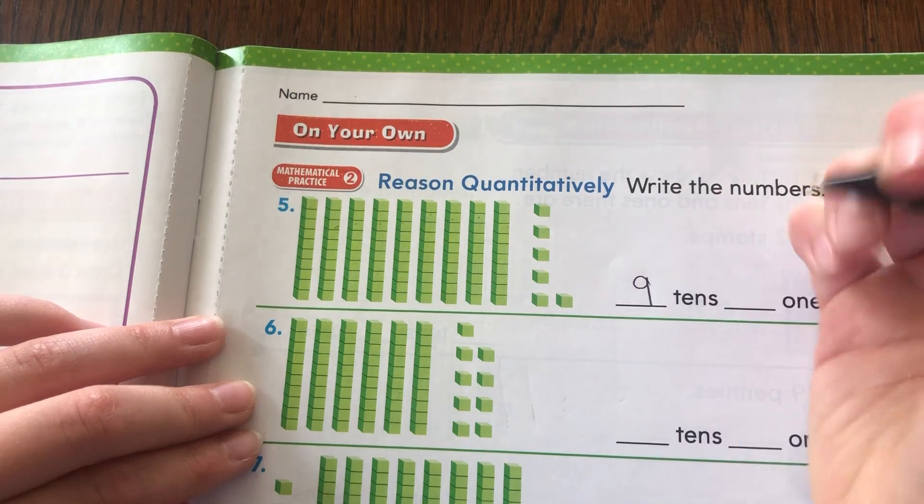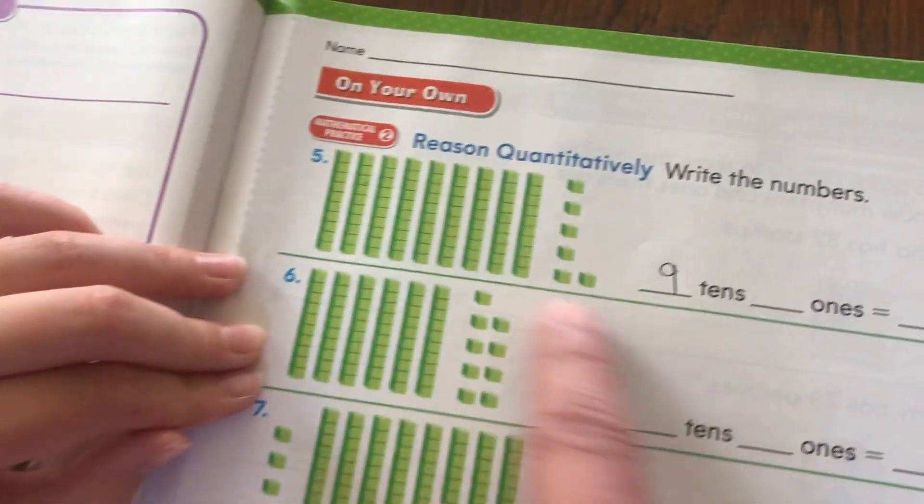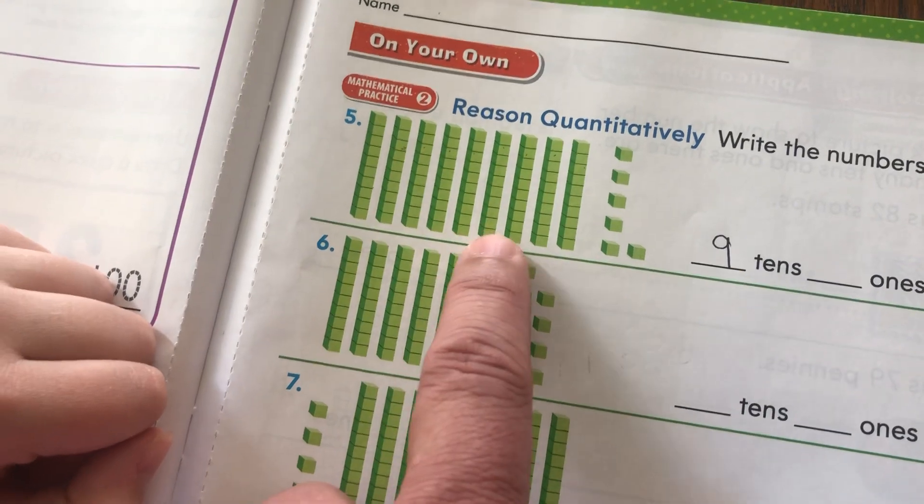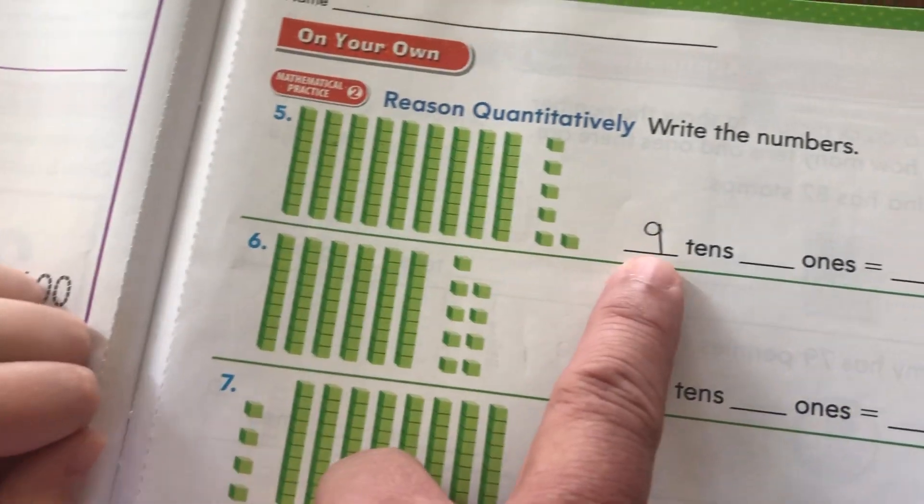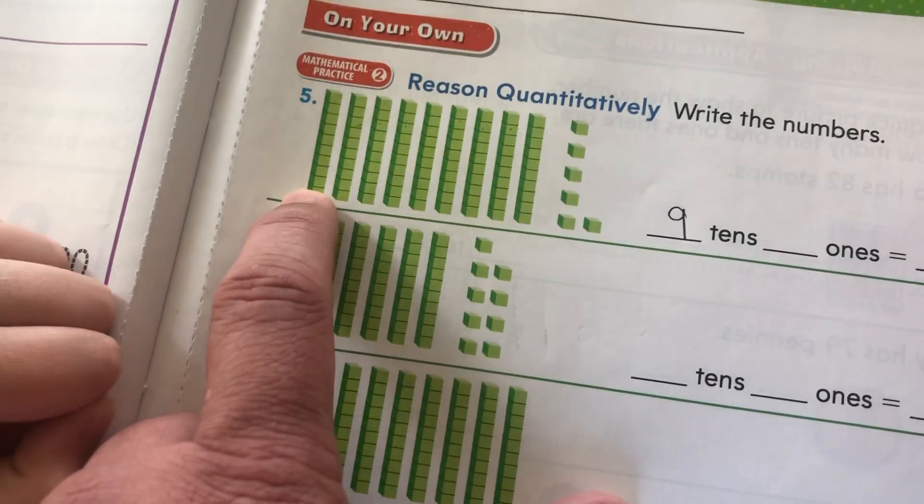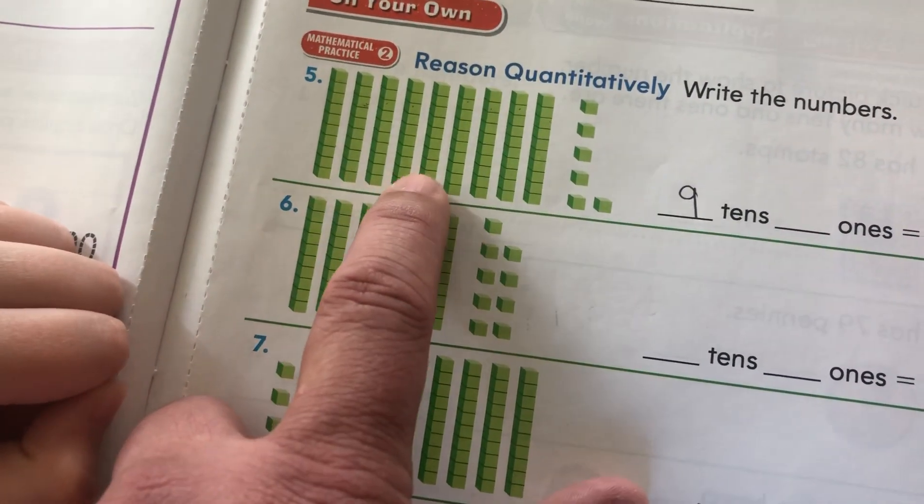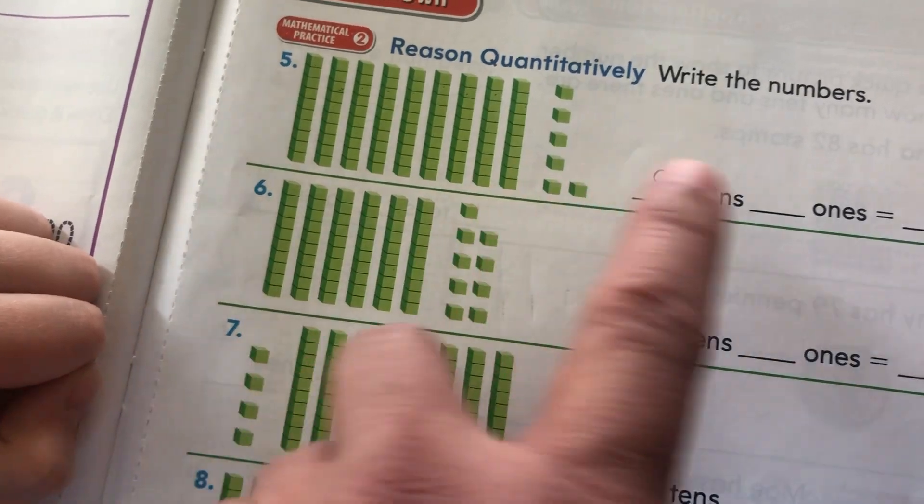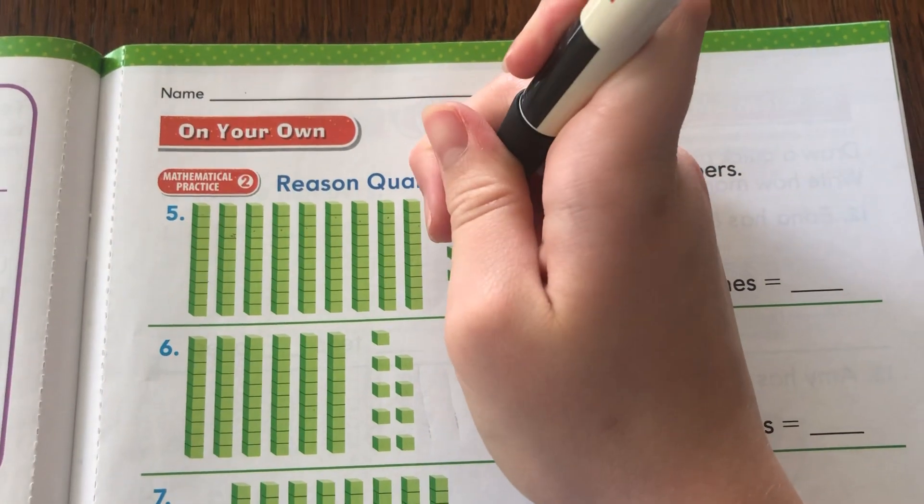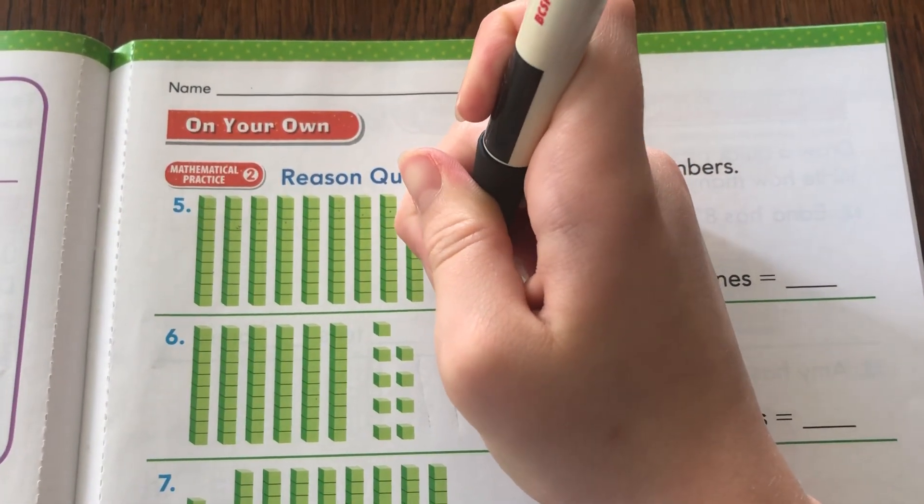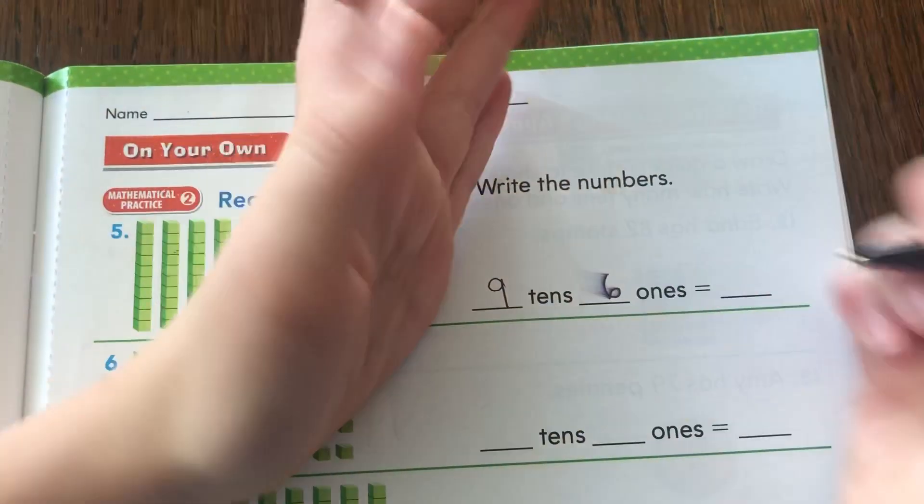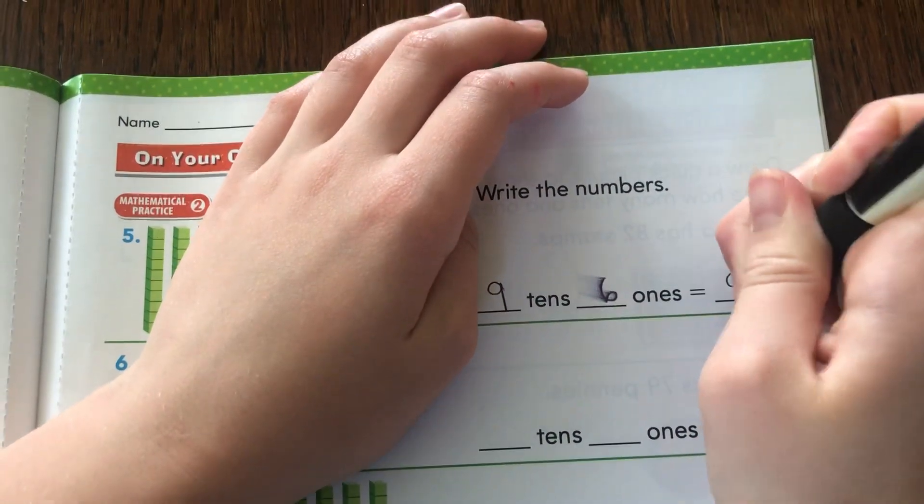When you count tens I noticed you were counting by tens: 10, 20, 30, 40, 50, 60, 70, 80, 90. But here you wrote nine. It's because there's nine tens: one, two, three, four, five, six, seven, eight, nine. And then here are just one, two, three, four, five, six. And if you smush them together we get 96.